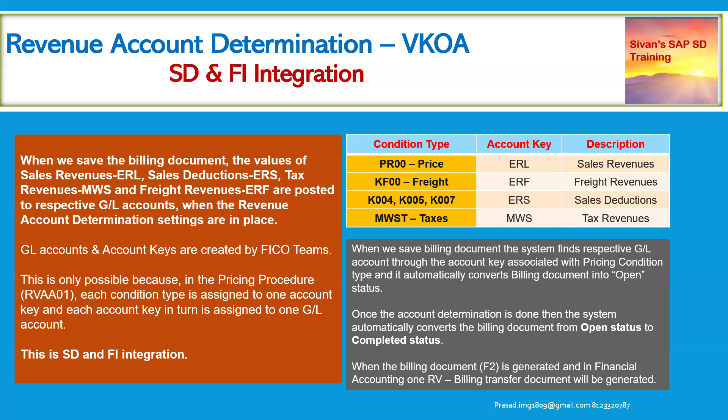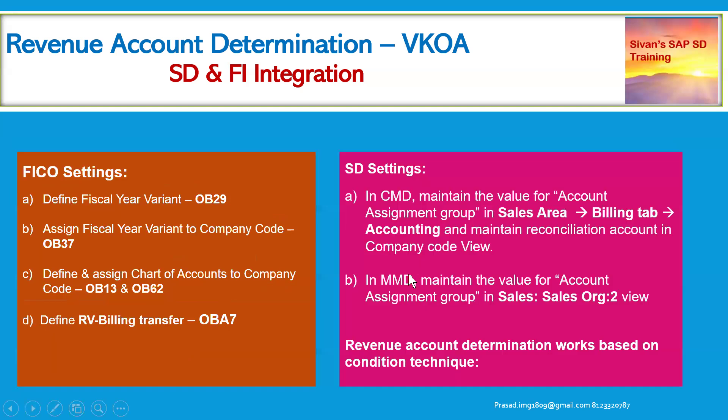The entire billing document is generated from the SD perspective — that is, up to billing document type F2 (standard) — and a corresponding document, the RV billing document transfer, is generated from the FI side and transferred to financial accounting.